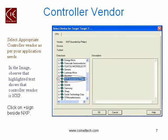After saving, the next task is to select your controller. To select your controller, we have different controller vendors as per our application needs. In the image, you can observe we have encircled an area that is NXP. It is a controller vendor which gives us a list of controllers. To see that list of controllers, click on the plus sign beside NXP and then click on OK.